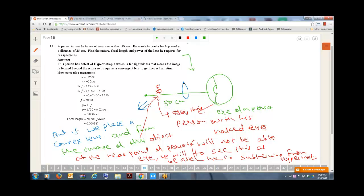What it is doing is it is forming the image of this particular object at the near point of the person with a defective eye. Are you getting that?